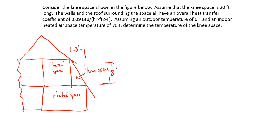The drawing's got enough depth attributes here, so I'm going to do my best. Bear with me. We have in this house structure what is considered a heated space. The house has a knee space. It measures three feet by eight feet. The statement of the problem says: Consider the knee space shown in that figure. Assume that the knee space is 20 feet long, so 20 feet into the page. The walls and the roof surrounding the knee space all have an overall heat transfer coefficient of 0.09 BTU per hour foot squared Fahrenheit. Assuming an outdoor temperature of 0 Fahrenheit and an indoor heated airspace temperature of 70 Fahrenheit, determine the temperature of the knee space.